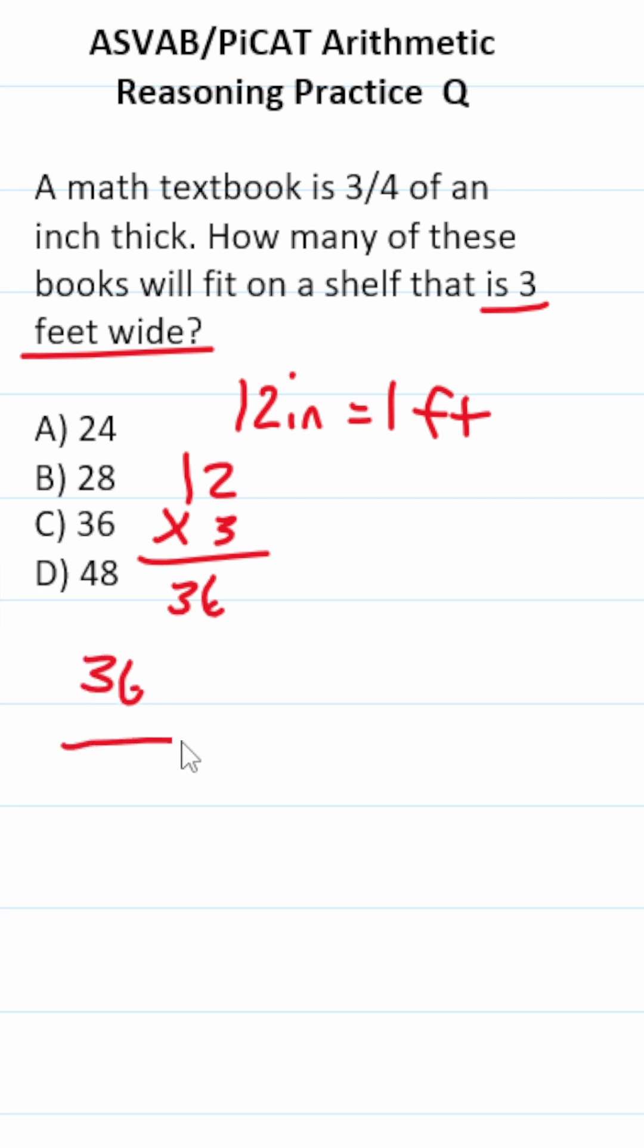Now, if each textbook is three quarters of an inch, we could do 36 divided by three quarters to get our answer.